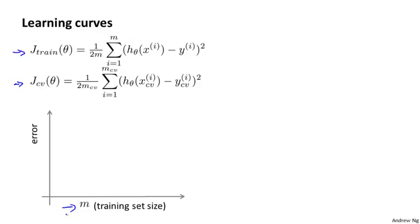M is usually a constant — maybe I just have 100 training examples. But what I'm going to do is artificially reduce my training set size. So I'll deliberately limit myself to using only, say, 10 or 20 or 30 or 40 training examples, and plot what the training error is and what the cross-validation error is for these smaller training set sizes.